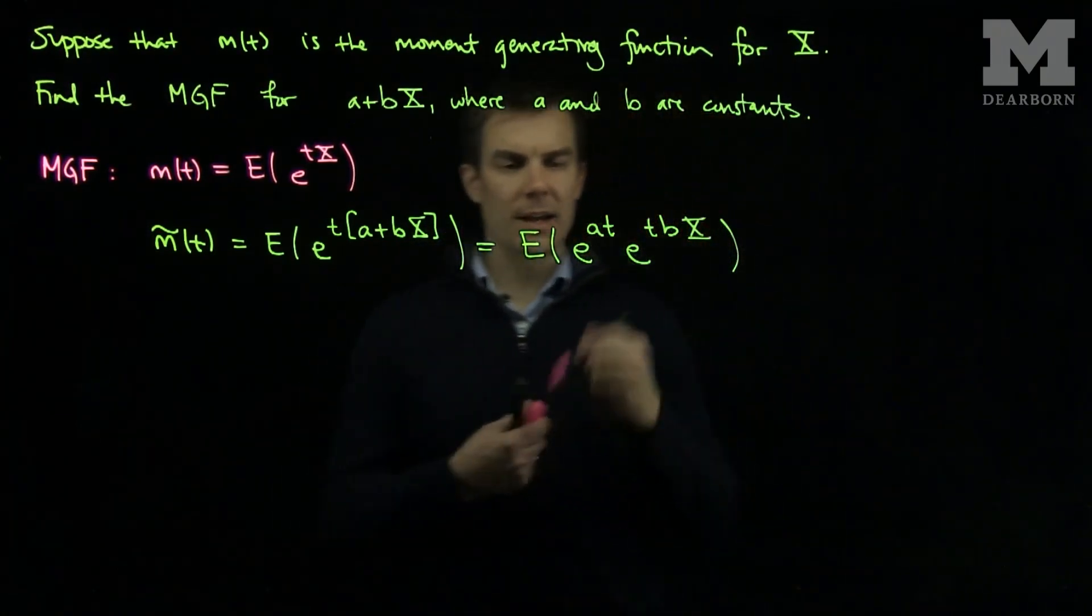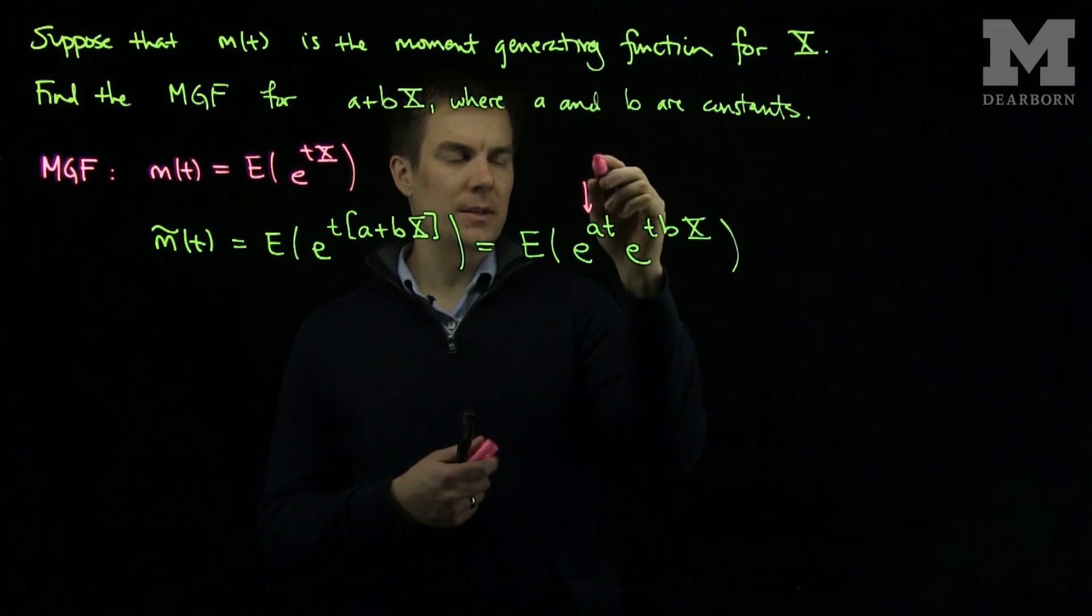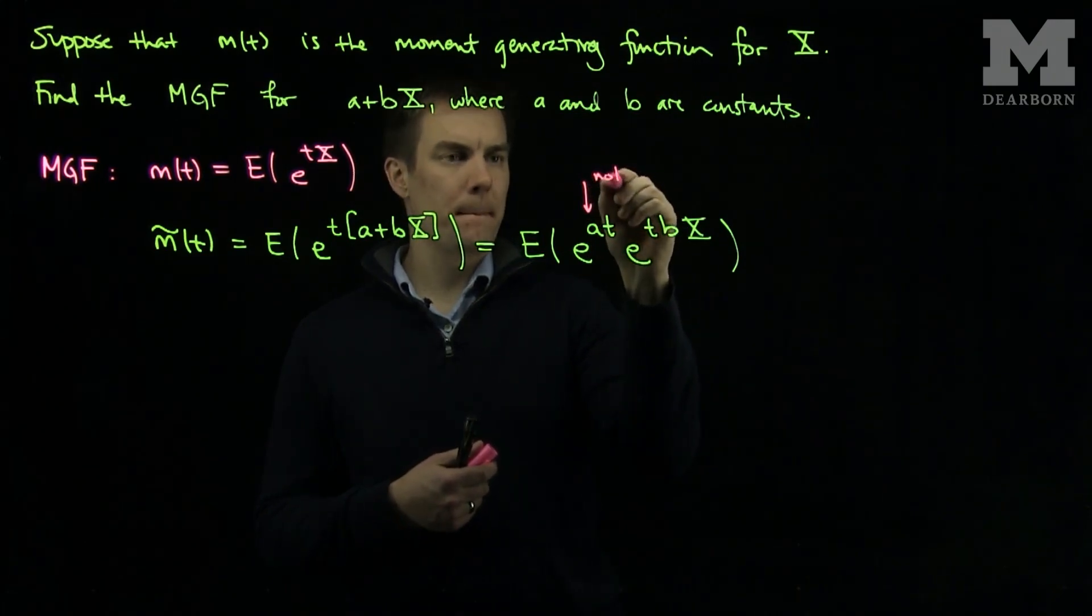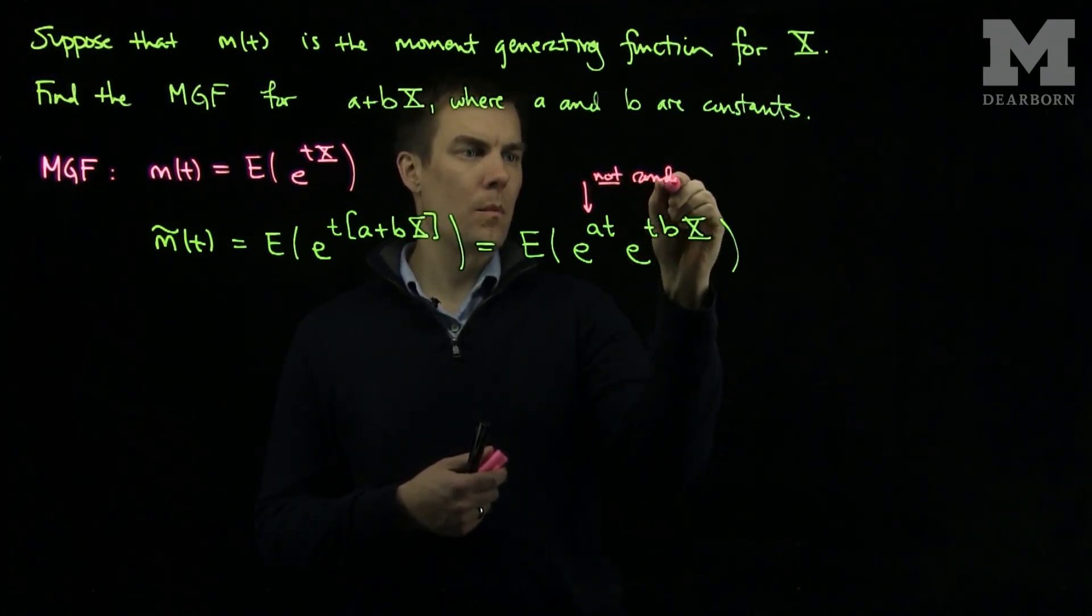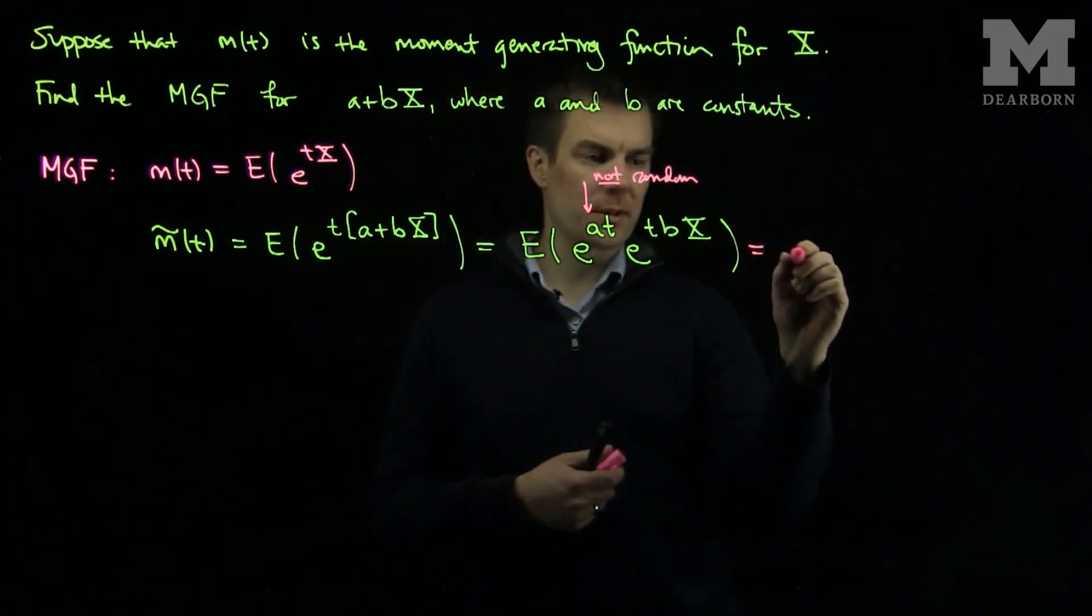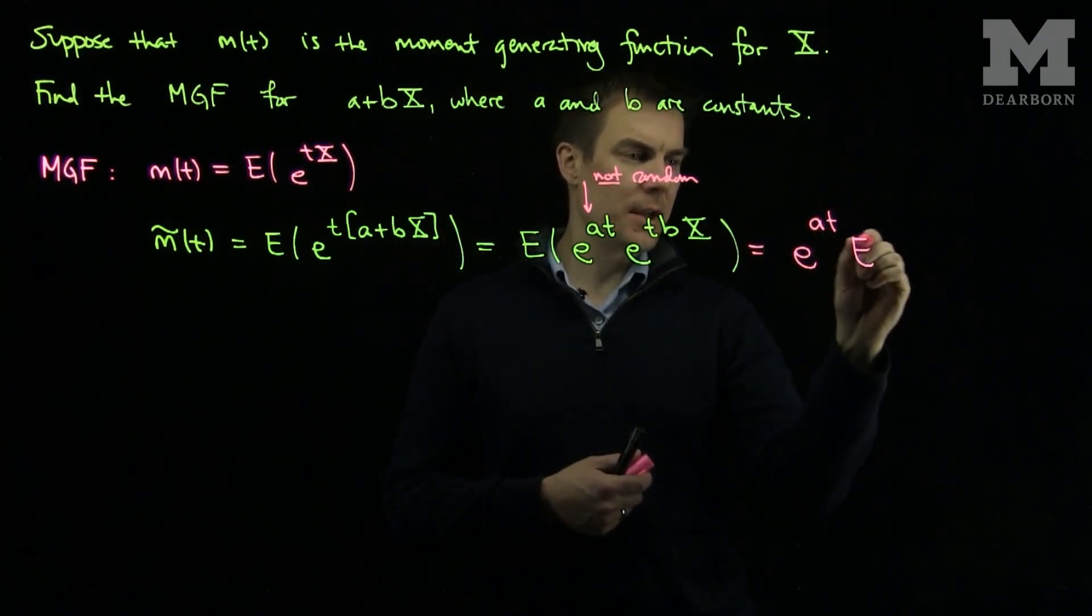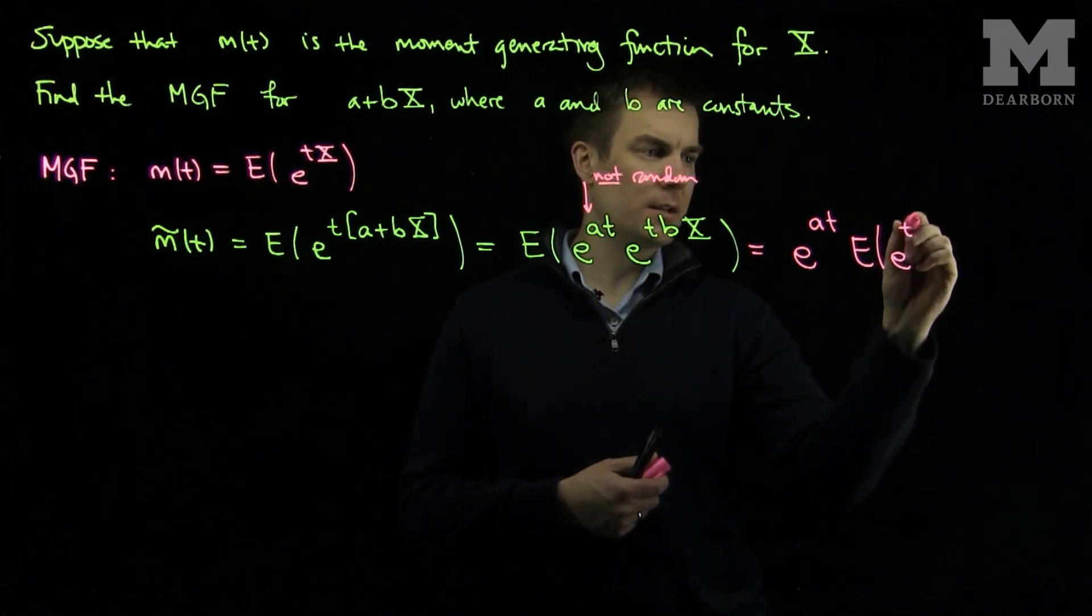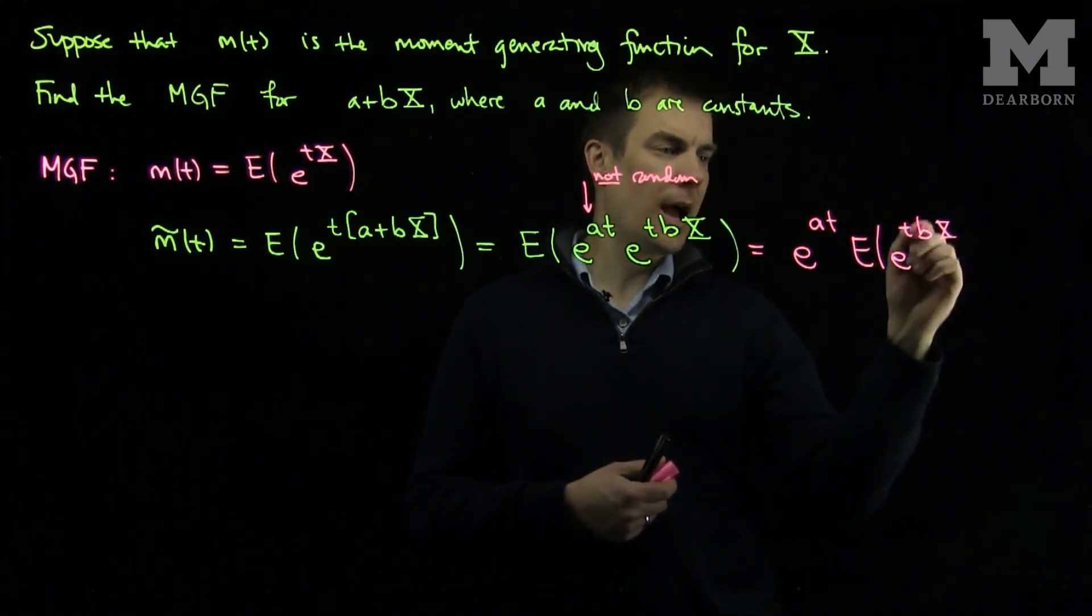Now, this e to the at is not random, so we can pull it out of the expected value: e to the at times the expected value of e to the tbX.